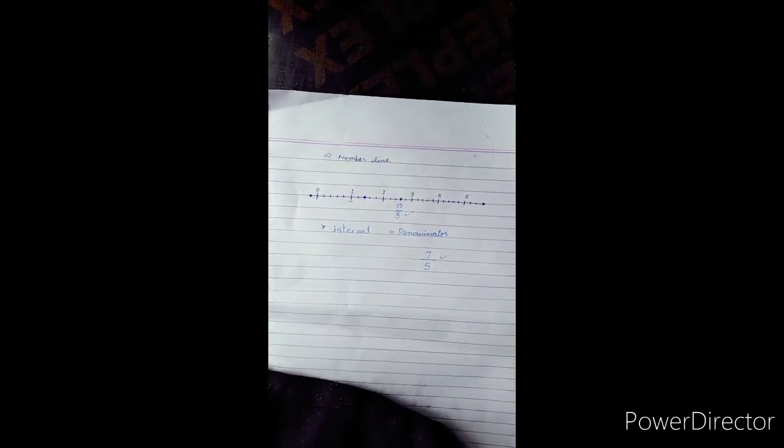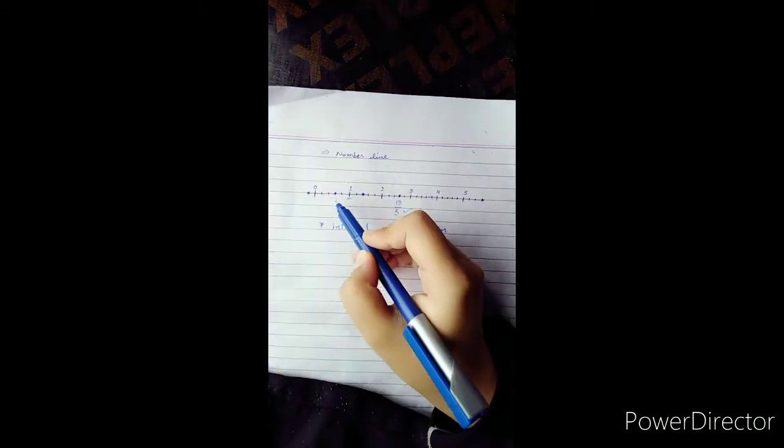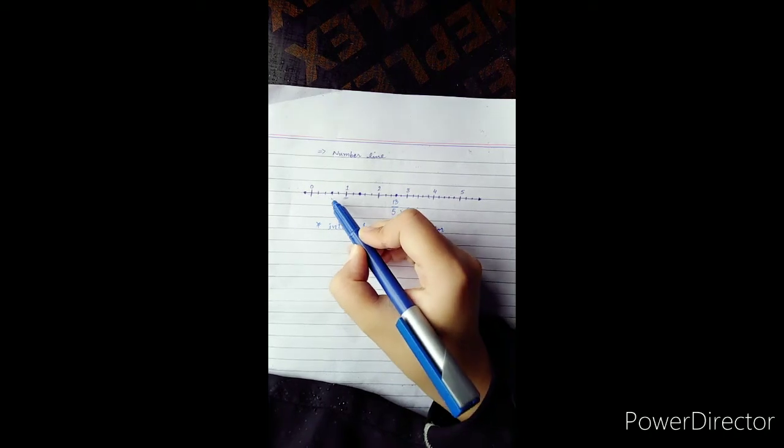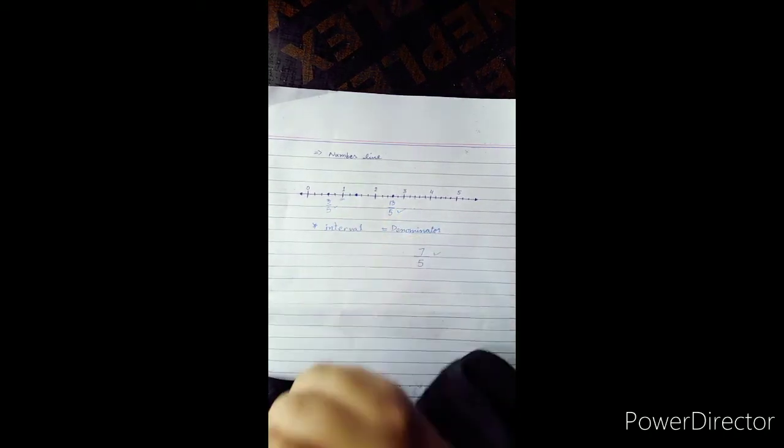And this is also an improper fraction. But if we have a point here, if we write this point, what is the fraction? 1, 2, 3, 3 by 5. So this is a proper fraction.